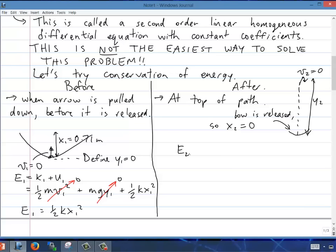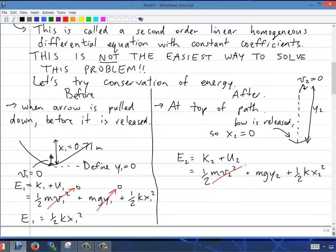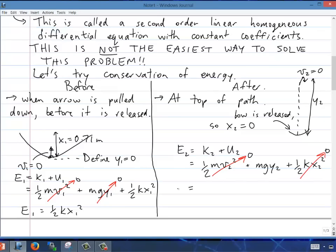So we can write down now E2, the final energy. This is going to be the sum of K2 + U2, the final kinetic plus potential: ½mv2² + mgy2 + ½kx2². So v2, final speed is zero. Also x2 is zero as we discussed. So final energy is just mgy2.